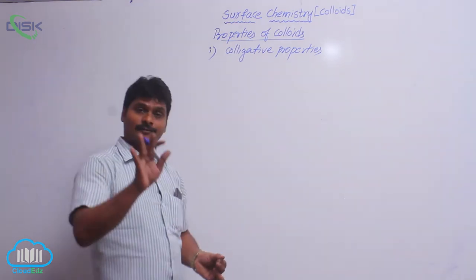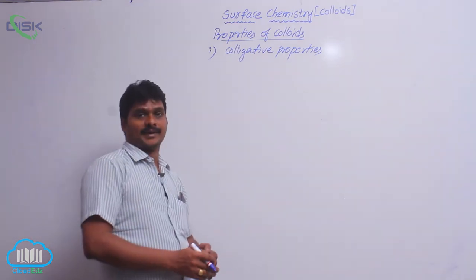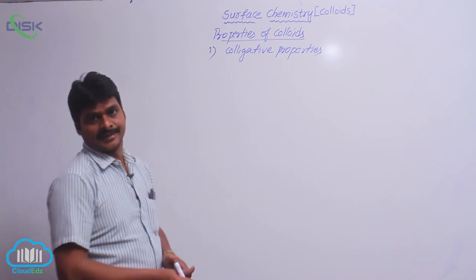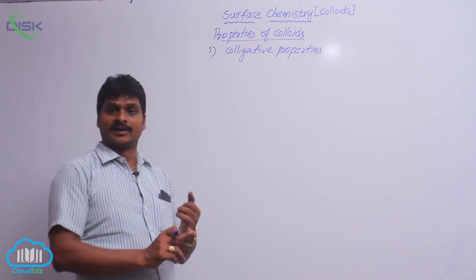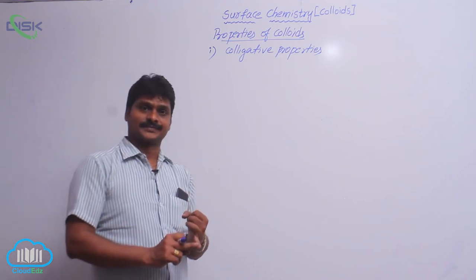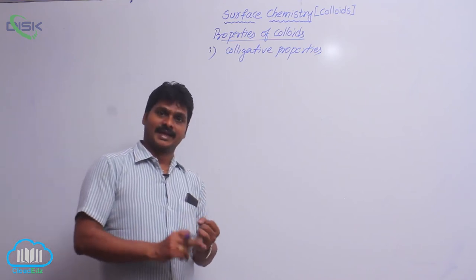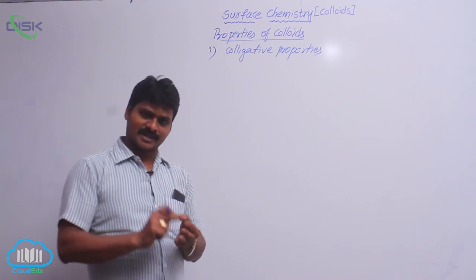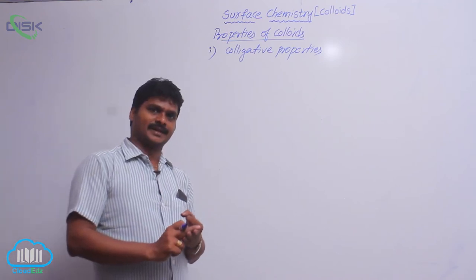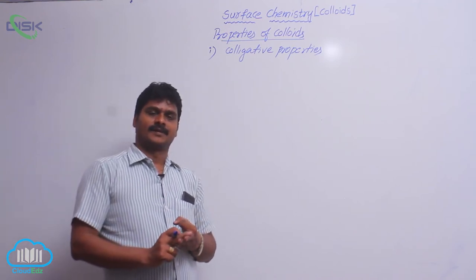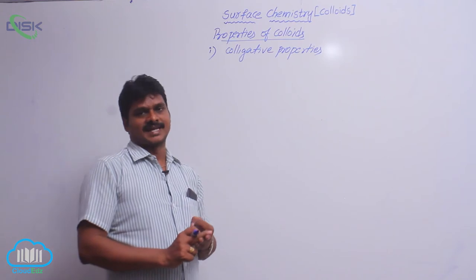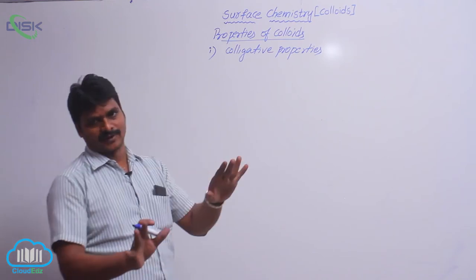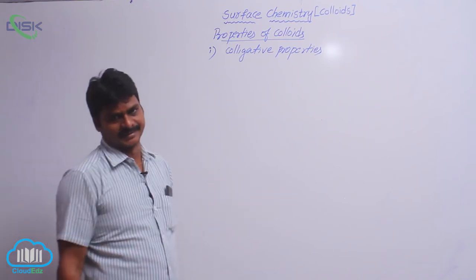There are four colligative properties. What are they? Relative lowering of vapor pressure, elevation in the boiling point, depression in the freezing point, and the last one is osmotic pressure. These are the four colligative properties.